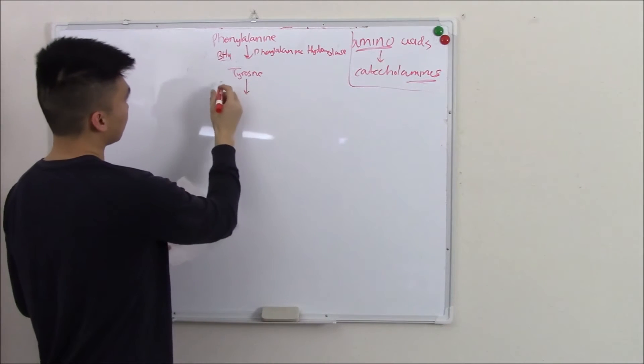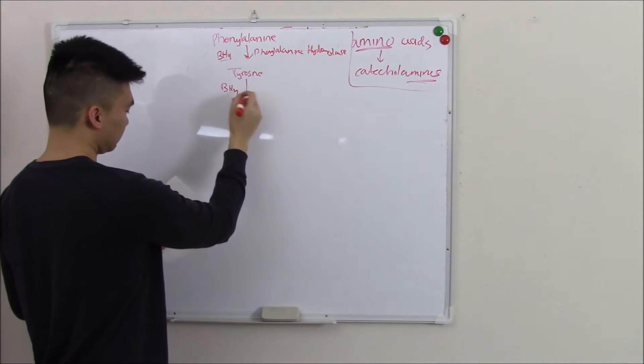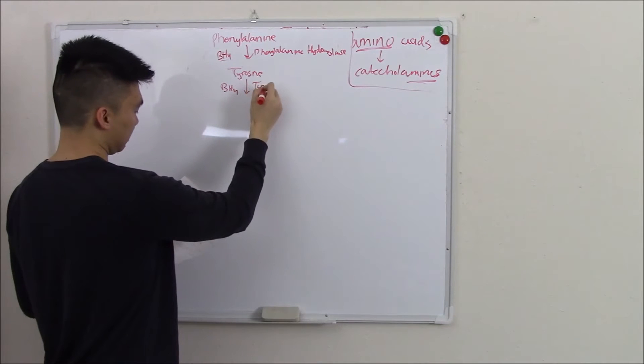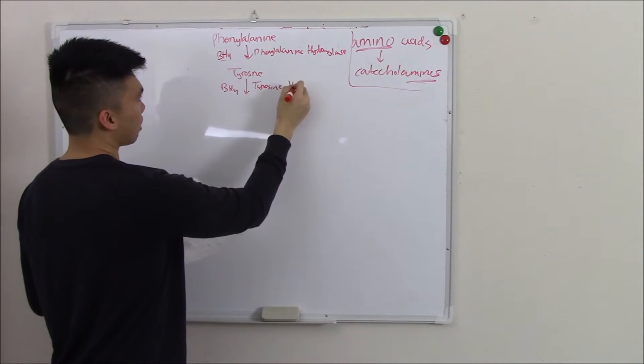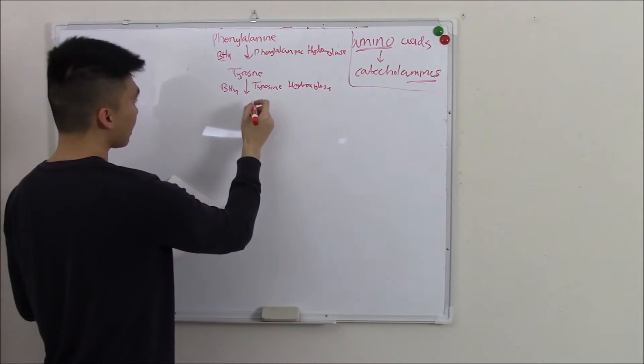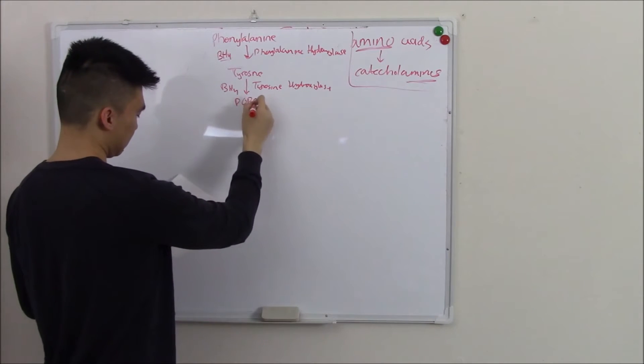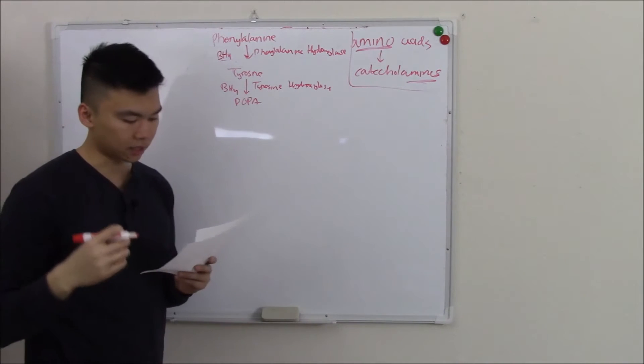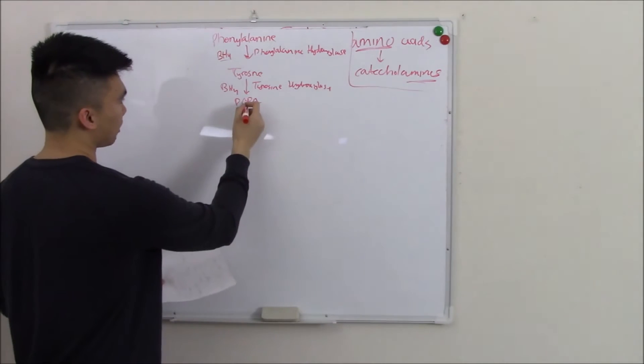Tyrosine, again with the help of BH4 and enzyme tyrosine hydroxylase becomes DOPA or dihydroxyphenylalanine. We like to just call it DOPA.